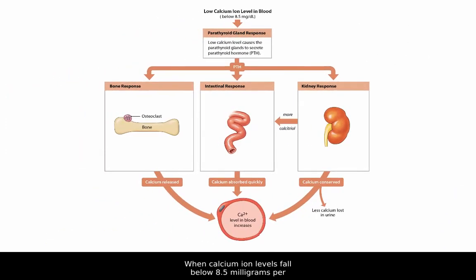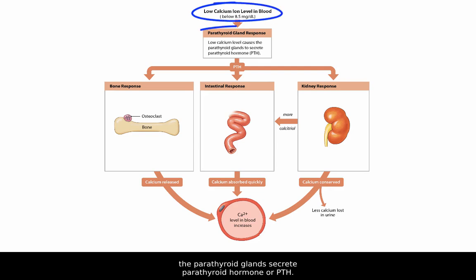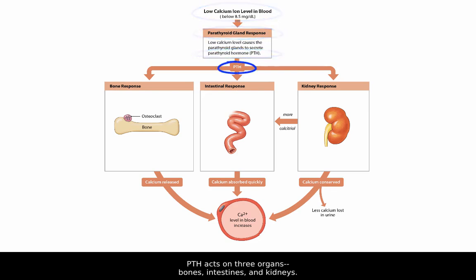When calcium ion levels fall below 8.5 mg per deciliter of blood, the parathyroid glands secrete parathyroid hormone, or PTH. PTH acts on three organs: bones, intestines, and kidneys.